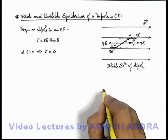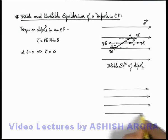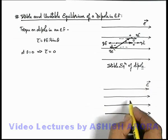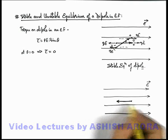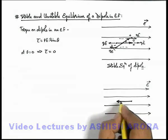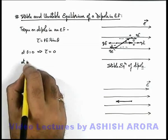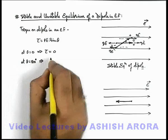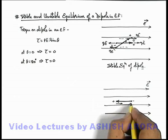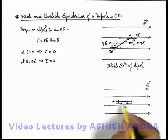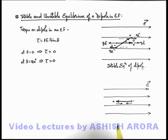Now similarly, if we consider another situation in which a dipole is placed in a uniform electric field such that its dipole moment is exactly opposite to the direction of the electric field — that is, the angle between the dipole moment and electric field is 180 degrees — then θ equals 180 degrees, and the value of torque is again zero. The positive and negative ends experience forces exactly opposite to each other, acting along the same line, so the torque is zero.